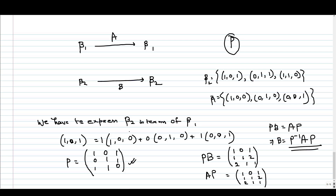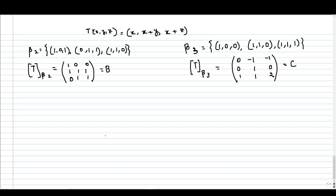P is constructed by expressing beta2 in terms of beta1. In the same example, we have not changed the linear transformation. Taking beta3 as another basis, we can calculate its matrix representation C. We now have two matrices B and C obtained by changing the basis, and B and C will be similar. We want to find matrix Q such that C = Q⁻¹BQ.